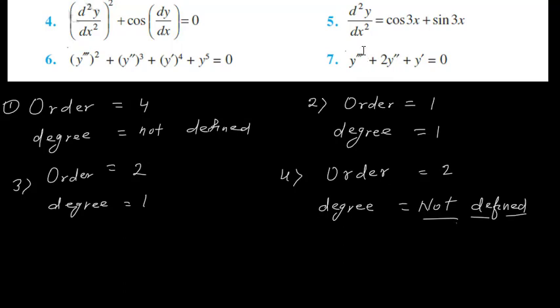Question 5: order is 2, degree is 1. Question 6: order is 3, degree is 2 — the highest power is 2. Question 7: order is 3, degree is 1 — y‴ has no written power so we consider it 1.